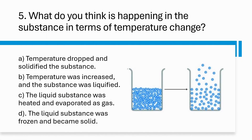What do you think is happening in the substance in terms of temperature change? A. Temperature dropped and solidified the substance. B. Temperature was increased and the substance was liquefied. C. The liquid substance was heated and evaporated as gas. D. The liquid substance was frozen and became solid.